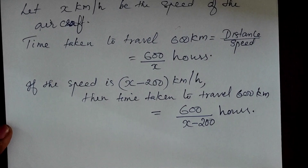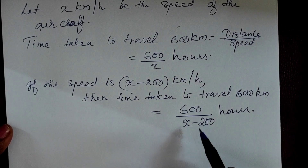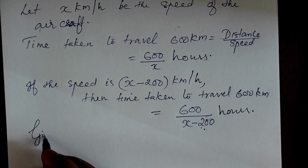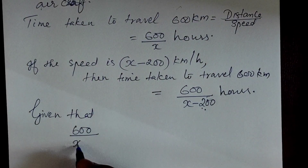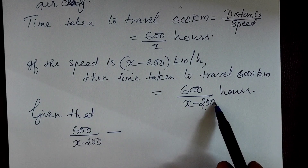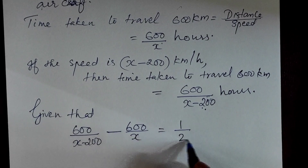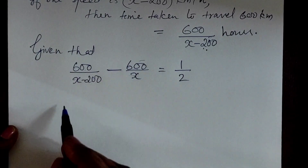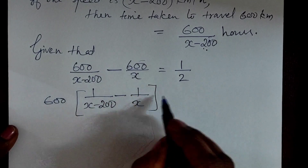This is the same time increased. Now, the time difference is 30 minutes. Converting to hours, 30 minutes equals half an hour, that is 1/2. As per the question, given that: 600 divided by (x minus 200) minus 600 divided by x equals 1/2. Taking 600 as common: 600 times [1/(x-200) minus 1/x] equals 1/2.